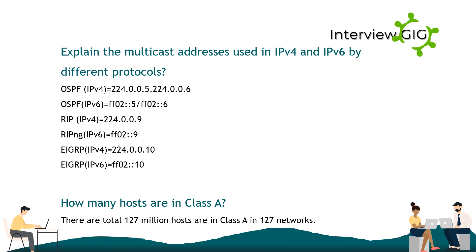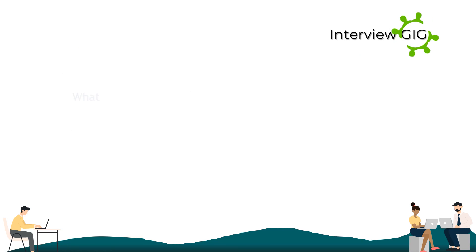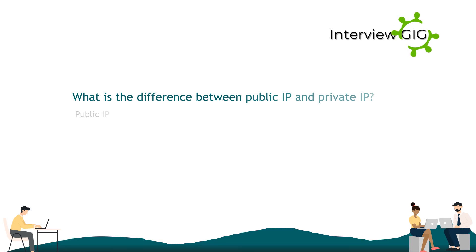How many hosts are in Class A? There are a total of 127 networks and 127 million hosts in Class A. What is the difference between public IP and private IP? Public IP is used across the internet, while private IP is used within the local LAN.